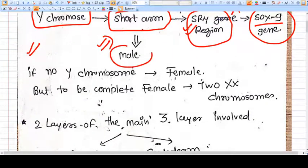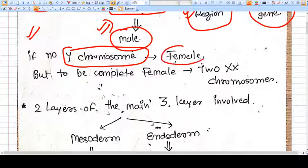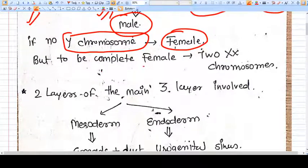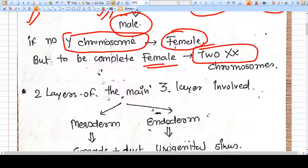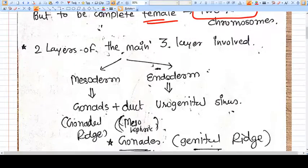If Y chromosome is not there, that means it's female. But to be a complete female, you need two X chromosomes. Now there are three basic layers of embryo development.